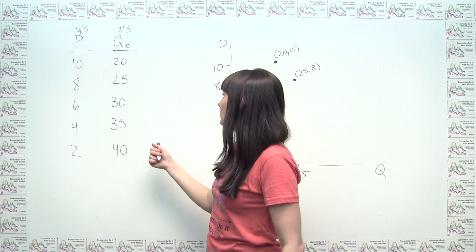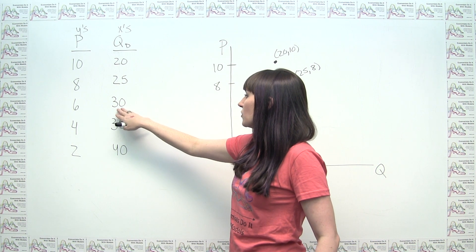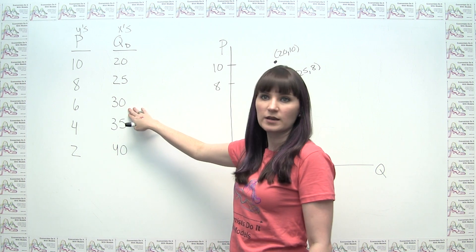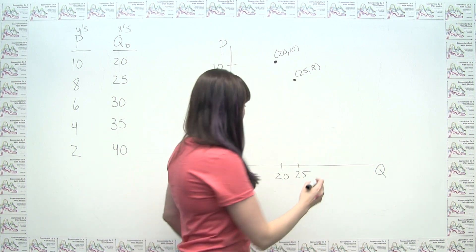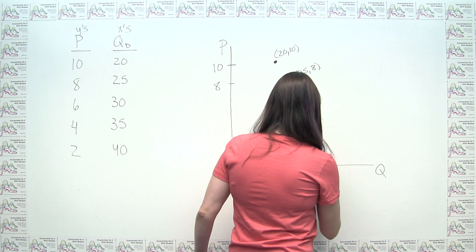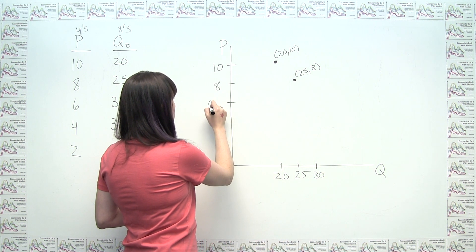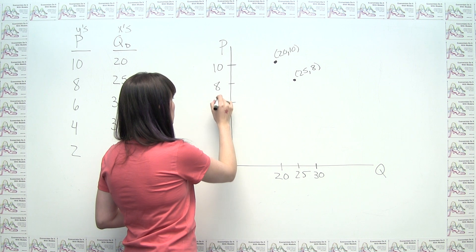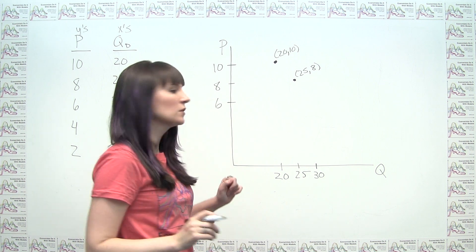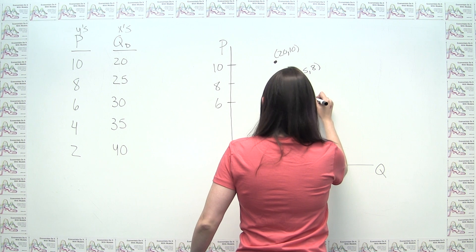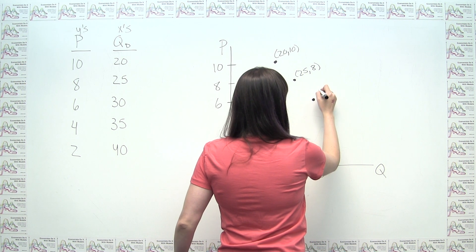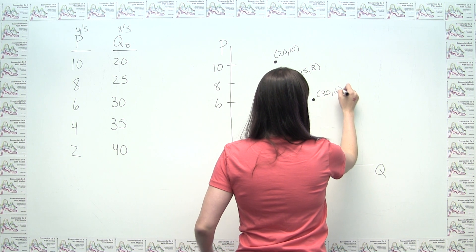I'm going to just keep doing that. Say the next one is going to be 30 comma 6, because 30 is our x variable. And we could say, well, 30 is somewhere here. Maybe 6 is about here. So then our next point would be here. Let's call this 30 comma 6.